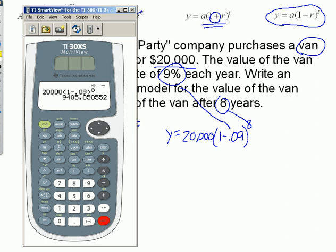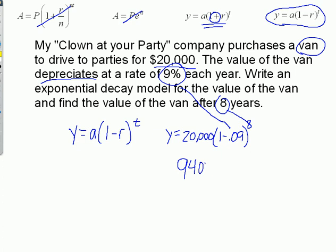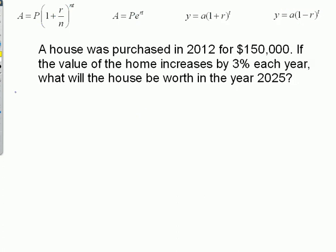So twenty thousand, parenthesis, 1 minus 0.09, close those parentheses, and raise it to the eighth power: $9,405. It passes the common sense test—a $20,000 van after eight years only being worth $9,405. Yes, I say it does. Eight years of use, it's not going to be worth near as much.